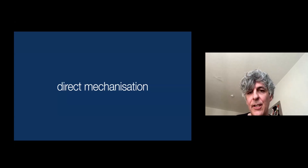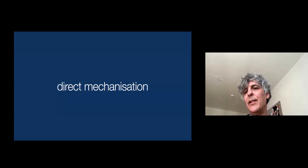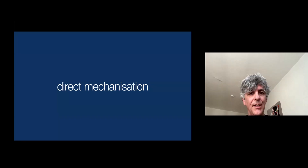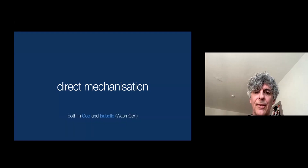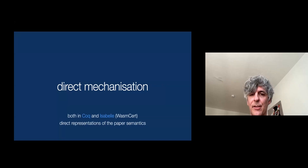With respect to the mechanization, what Harper and others did with SML is basically they first created a completely different formalization — not the one in the book, but one based on type theory — and that's what they actually mechanized. So there was quite a distance between the mechanization and the actual standard. Whereas with WESM, the mechanizations we have are really a direct representation of the paper semantics, as direct as possible.